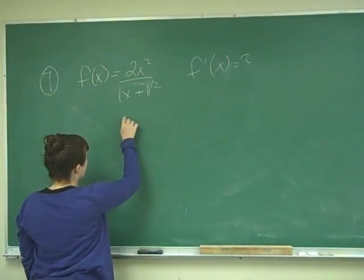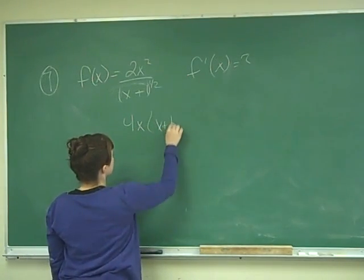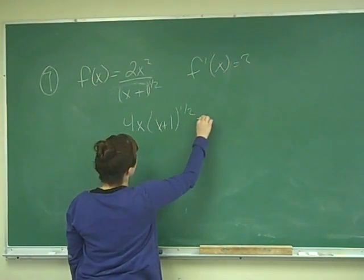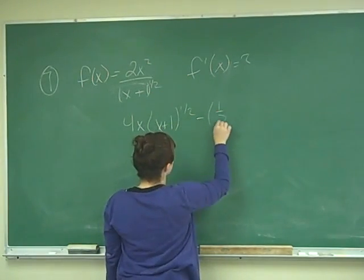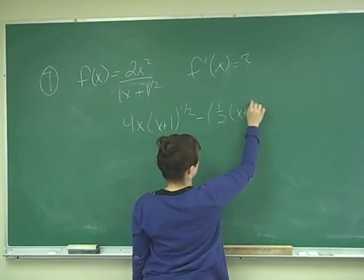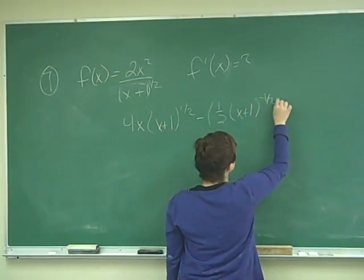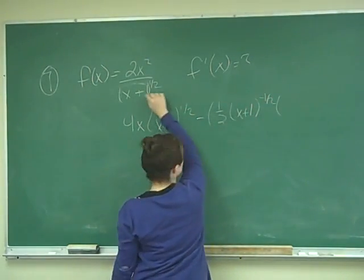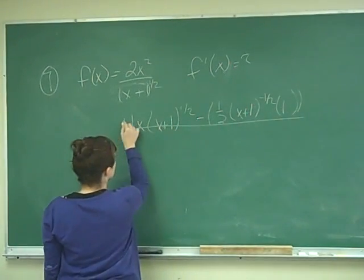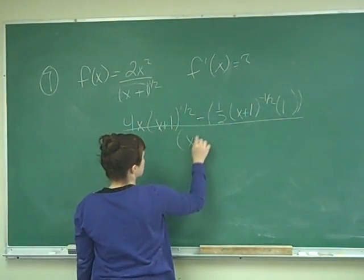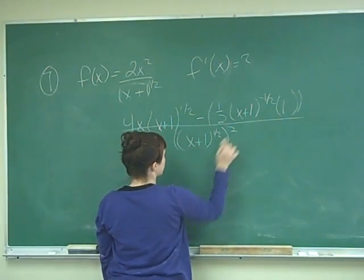So we're taking the derivative of the high, which is going to be 4x times the low, which is x plus 1 to the 1 half, minus the derivative of the low, which is going to be that 1 half x plus 1 to the negative 1 half times the derivative of the inside of that, which is just 1, all over our low term, which is x plus 1 to the 1 half quantity squared.